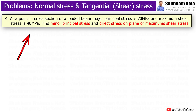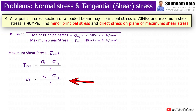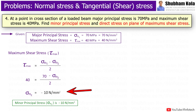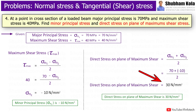For the next problem: at a point in a cross section of a loaded beam, the major principal stress is 70 MPa and maximum shear stress is 40 MPa. Find the minor principal stress and direct stress on the plane of maximum shear stress. Given: major principal stress = 70 N/m² and maximum shear stress = 40 N/m². Substituting these values into the maximum shear stress formula, minor principal stress = −10 N/m², which is compressive. The formula for direct stress on the plane of maximum shear stress is (sigma_n1 + sigma_n2) / 2, which gives direct stress = 30 N/m².